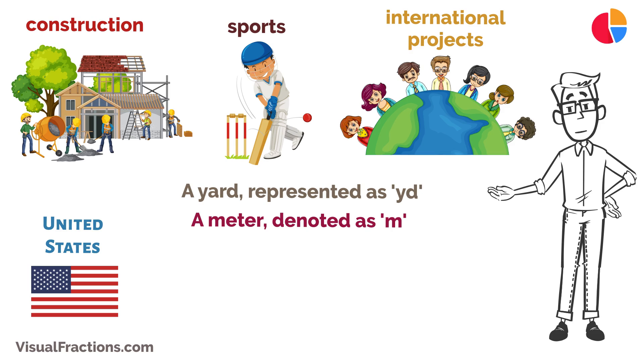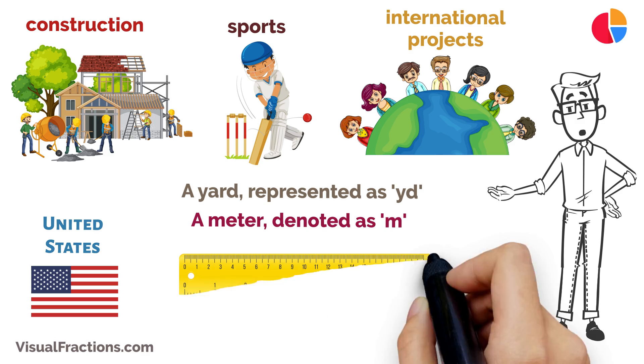A meter, denoted as M, is the base unit of length in the metric system. Understanding how to convert between these units is essential for accurate measurement conversions.